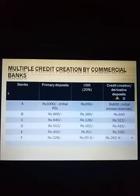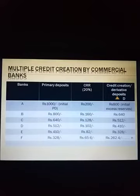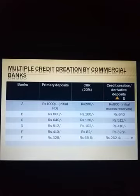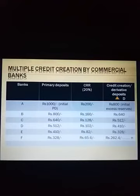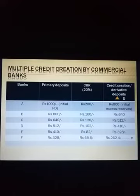Multiple credit creation by commercial banks can be clearly understood with the help of the following table. In this example, we assume primary deposits as rupees 1000 in Bank A, with a CRR of 20 percent. Bank A keeps 200 as cash reserve and can lend up to 800 rupees. The borrower of 800 rupees makes payment to someone else, which goes to Bank B as a primary deposit. Bank B must also keep 20 percent of 800, so it can lend up to 640 rupees. This process continues n number of times.